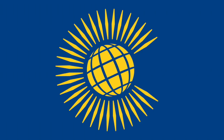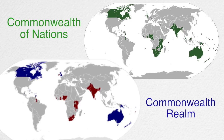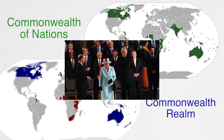Then we have the Commonwealth of Nations, which is most, but not all, of the former British Empire working together. Although it includes the Commonwealth realm and has the Queen as its head, it is entirely separate.